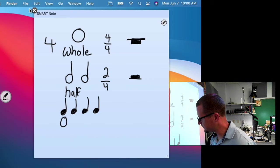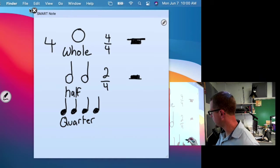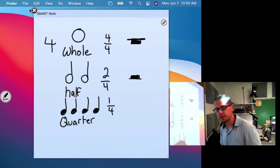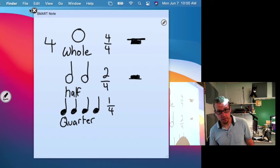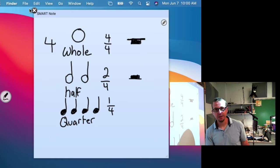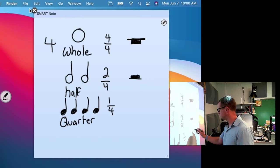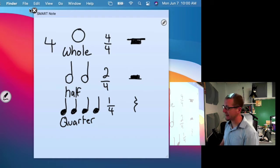So quarter notes are each worth 1 out of 4 beats, 1 fourth, also known as 1 quarter. That's why they are quarter notes. And a quarter rest kind of looks like that lightning bolt thingy. That's a quarter rest.